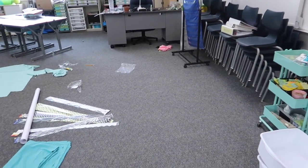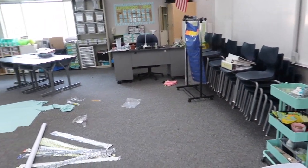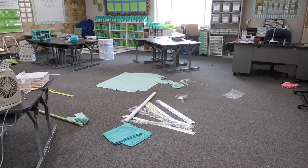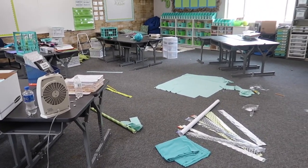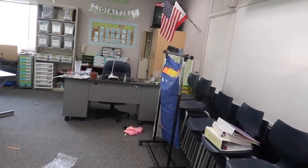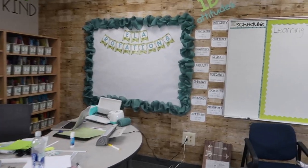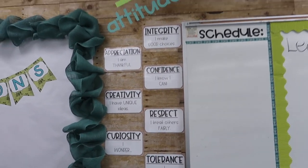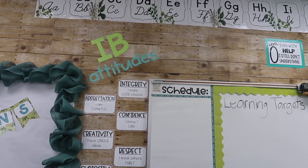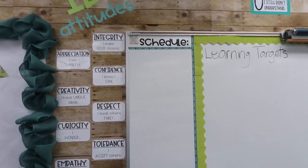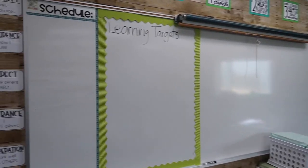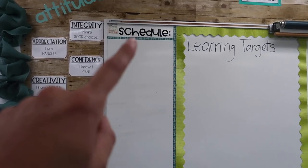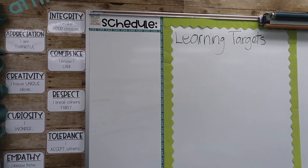The new third grade teacher came and picked up all these books, so my floor space is getting more clear. My goal today is to have everything off the floor. I had these IB attitudes from last year, so I created that title. I started sectioning off this whiteboard — this is where my schedule is going to live, and I cut out the schedule cards yesterday so I'm going to put those up as well.